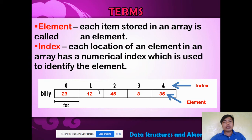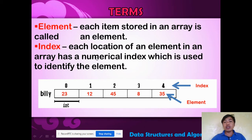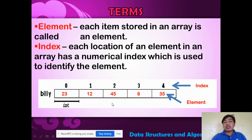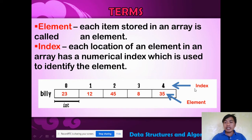There are terms used in arrays: element and index. When I say element, these are the items stored in an array. The index refers to the location of that element. For example, the array named Bili has five elements: 23, 12, 45, 8, and 35. The index represents the location of each element.